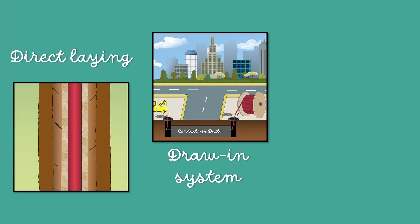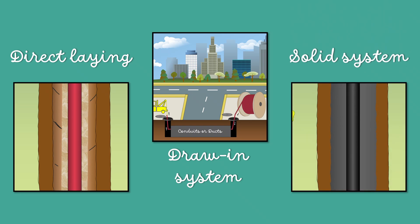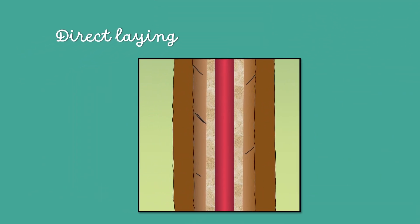There are three main types of laying underground cables: Direct Laying, Drawn System and the Solid System. Let's first see about the Direct Laying.